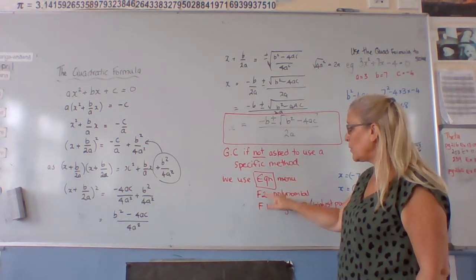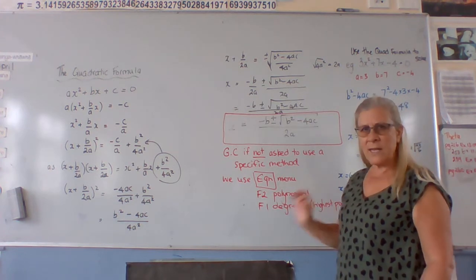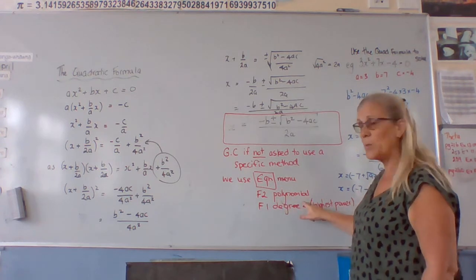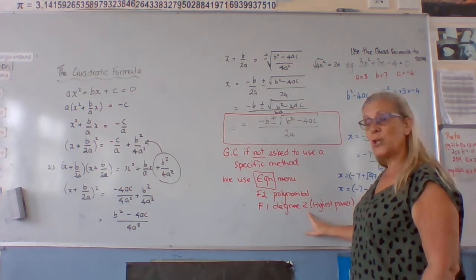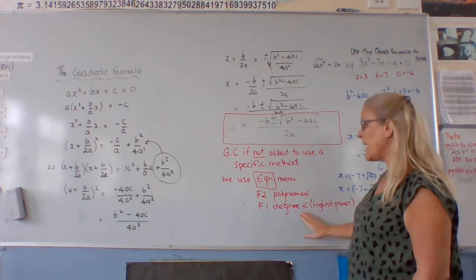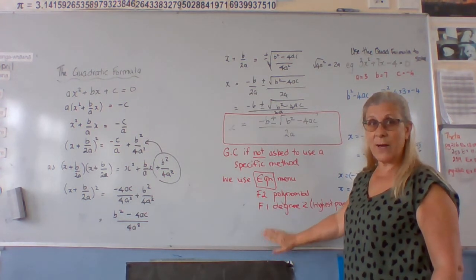So if we aren't, we use the equation menu, F2 for polynomial. Never use solver, that only gives us one answer. If we've got an x squared, we need to use the polynomial button, and degree 2 because we've got a squared power is 2. And then that will give us our two answers.